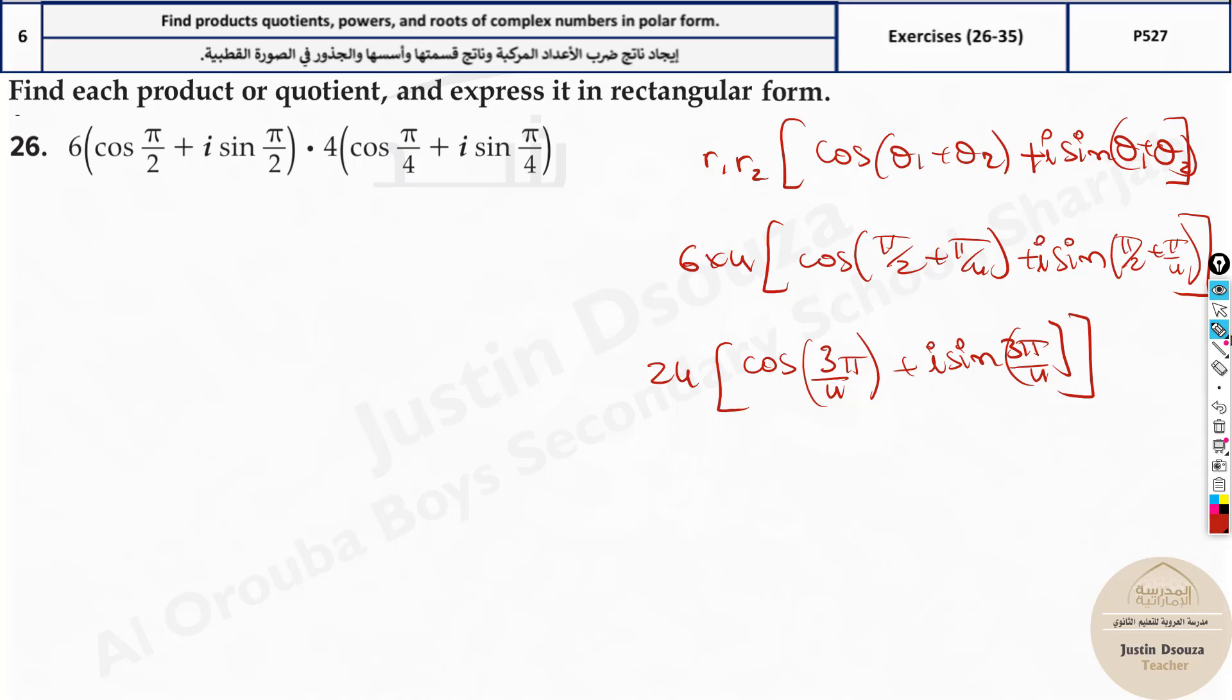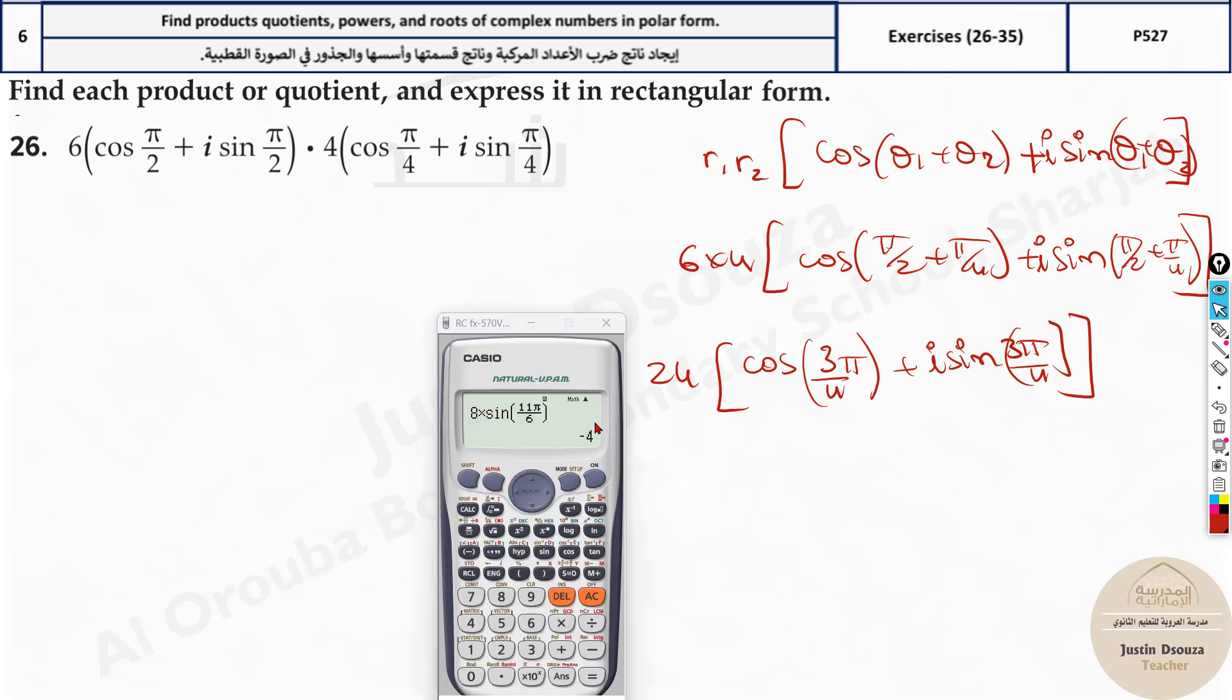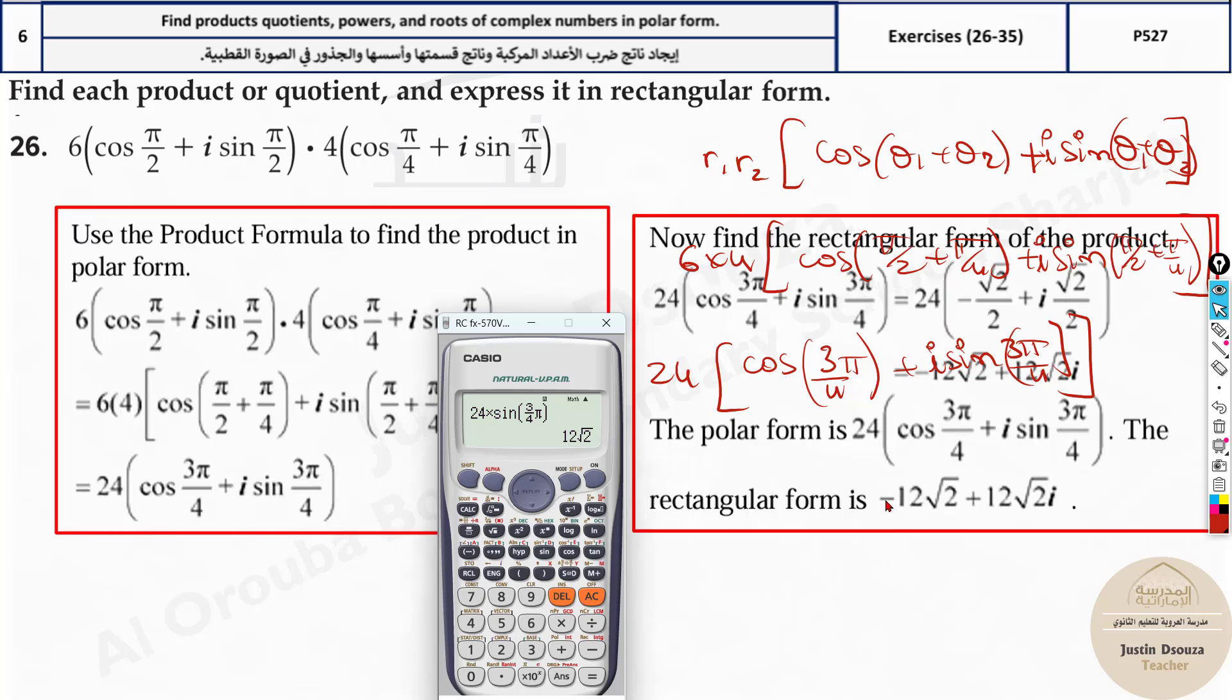But we need the rectangular form, right? So, your answer will not be in this form. It will be in rectangular form. So, we need to have a calculator with this. Now, what you need to do is type this out 24 times. What is this? Cos 3 pi by 4. So, 3 by 4 pi is also same thing or 3 pi by 4 is the same. So, what is this answer? It's negative 12 root 2. Same thing. Just change this cos to sine over here. Just delete this and put sine. You get the answer 12 root 2 as well. So, the answer is negative 12 root 2 and positive 12 root 2. But the positive part as i over here. Because it was the imaginary part. Simple as that.